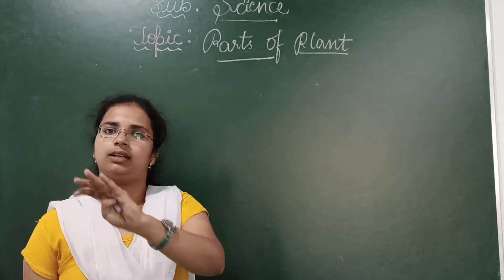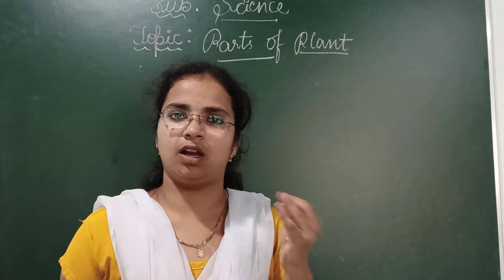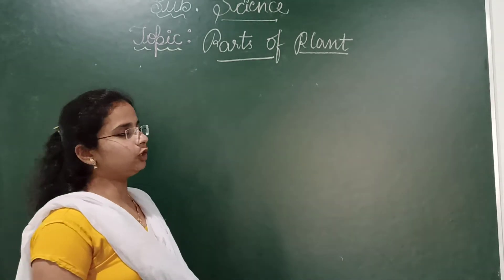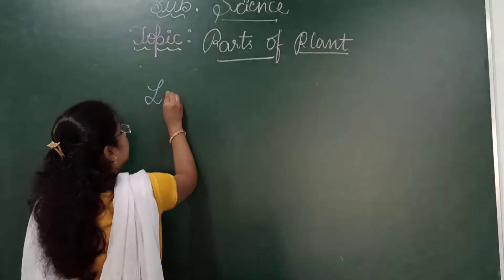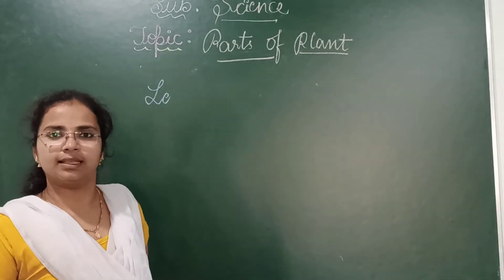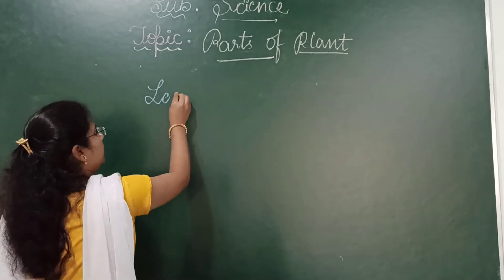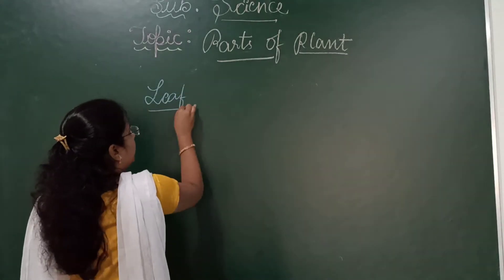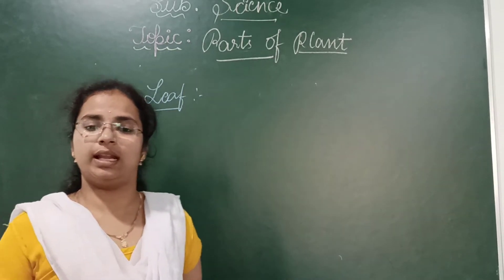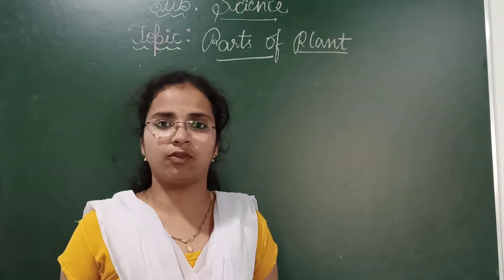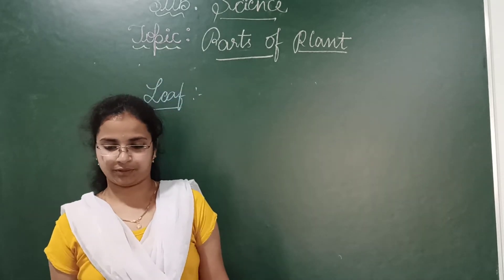This is the recollection of things we learnt in our previous class. Now we shall learn about the parts of the stem. The main thing which is very important for the plant is leaf.